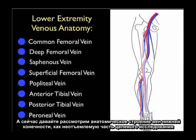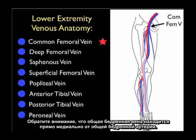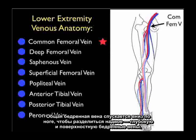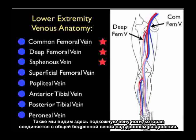Let's now review the lower extremity venous anatomy integral to performance of the focused DVT examination. We begin by identifying the common femoral vein, seen just below the inguinal ligament, just medial to the common femoral artery. The common femoral vein continues down the leg to bifurcate into the deep and superficial femoral veins. We also see here the saphenous vein, which joins into the common femoral vein above the level of bifurcation.